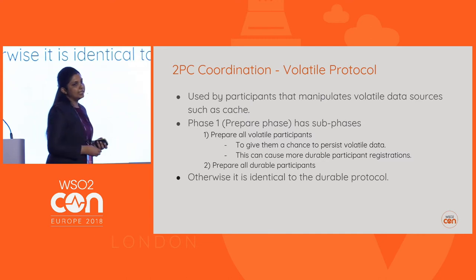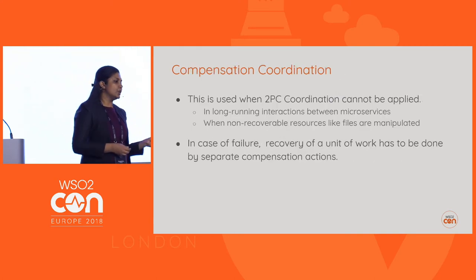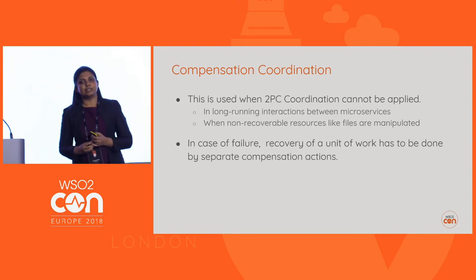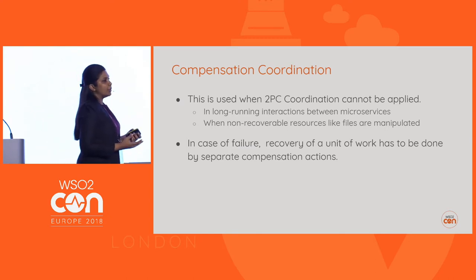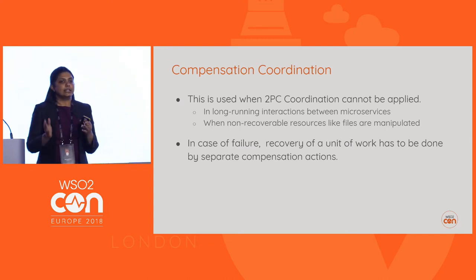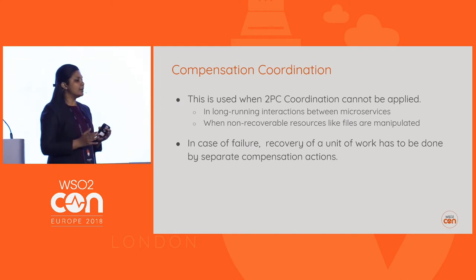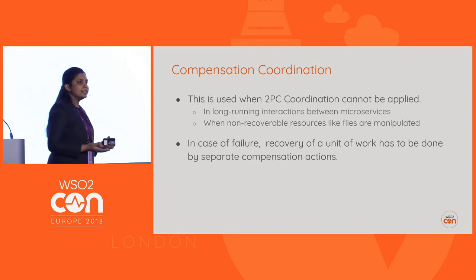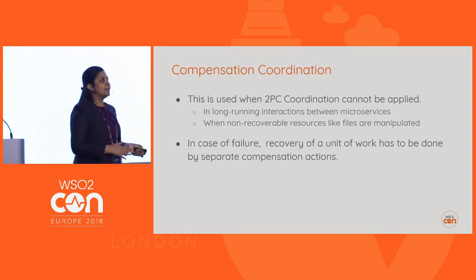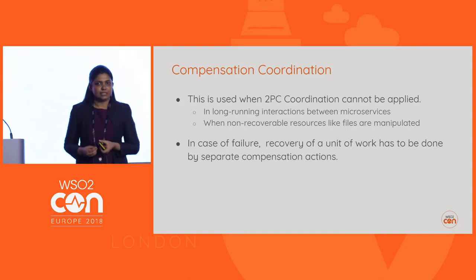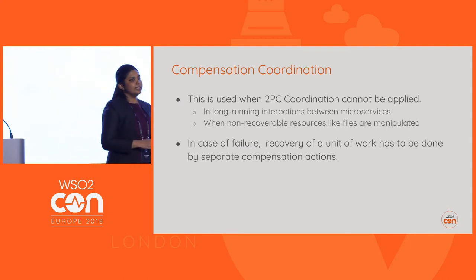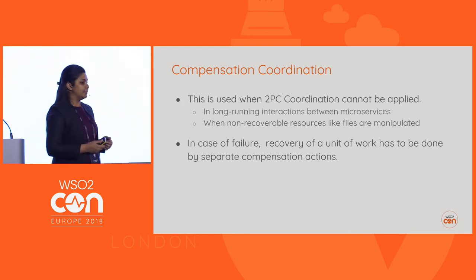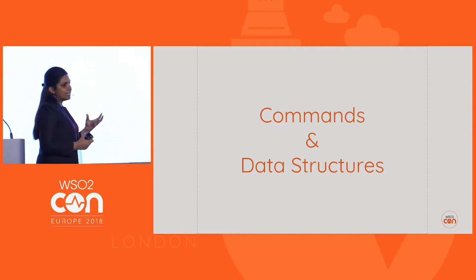Now let's see the other coordination type: compensation coordination. This is used when we cannot apply normal transaction semantics like two-phase commit. One scenario is long-running transactions where a lot of work has been done and we can't simply revert it. Another is interaction with non-recoverable or non-transactional data sources like writing to a file, printing a check, or sending an email. In those scenarios we need separate compensation actions to revert the actions performed during the transaction.